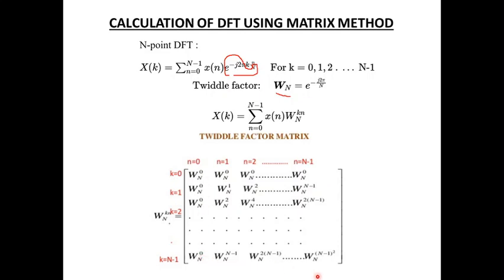This is the order in which your twiddle factor matrix can be formed for any number of points — n can be 2, n can be 4, n can be 8. Computationally, you will most often be dealing with n=2 and n=4.